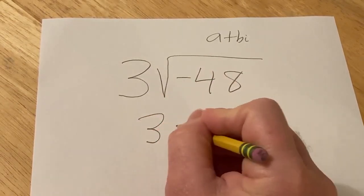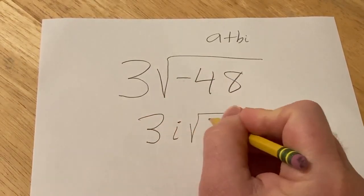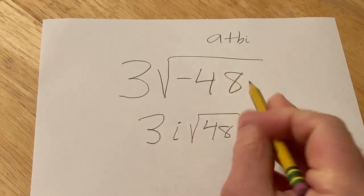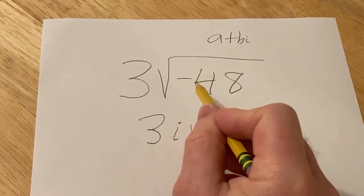So this becomes 3i square root 48. So the very first step, always get rid of the negatives inside the square roots.